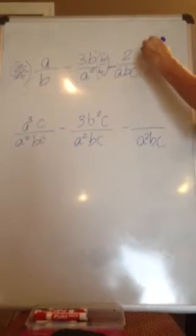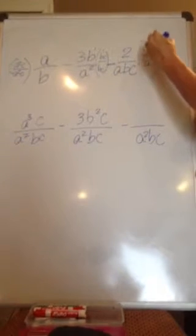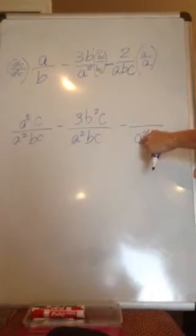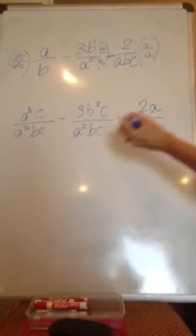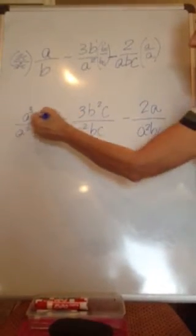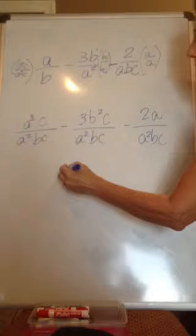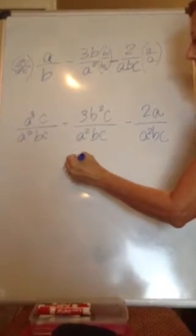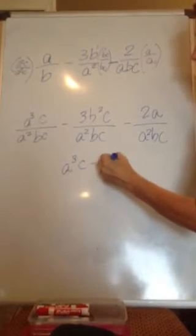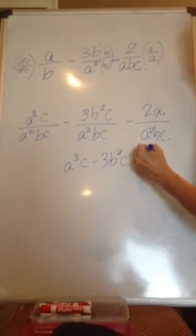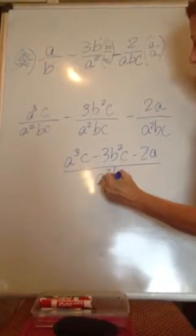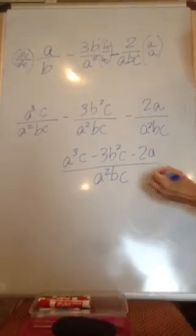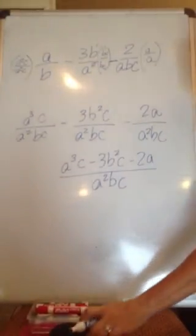Now for this one, all we have to do is multiply it by A over A, and that gives us the A squared BC, and we have 2A. Again, we can add and subtract all of our numerators. That's A cubed C minus 3B squared C minus 2A over our one common denominator. And we have no like terms, so we cannot combine them.